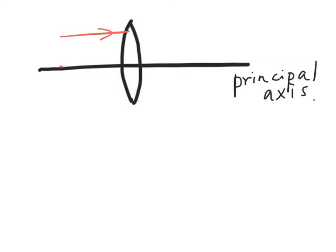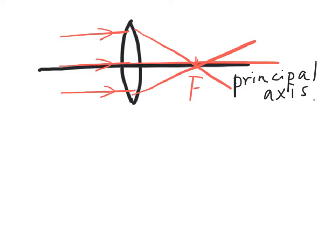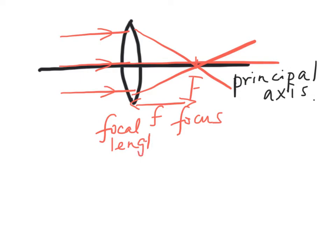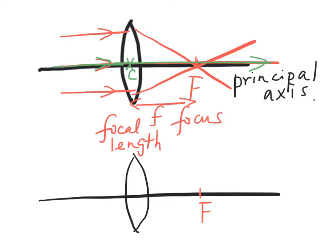When three parallel light waves travel parallel to the principal axis towards the lens, after refraction, the light waves will converge at a point which we call the focus. The distance between the focus and the lens is called the focal length. Notice that the light wave traveling through the center of the lens will travel in a straight line. For a convex lens, there are two foci at equal distance from the center of the lens, C. The distance between F and C is the focal length, f.